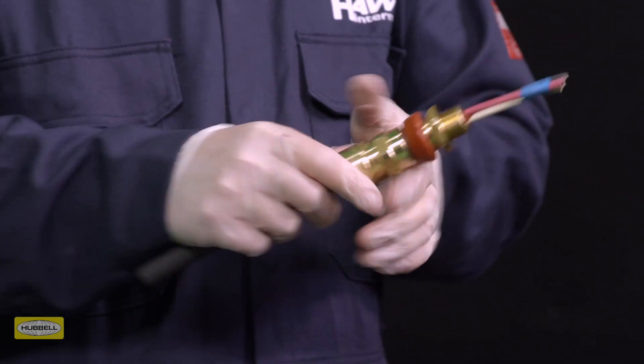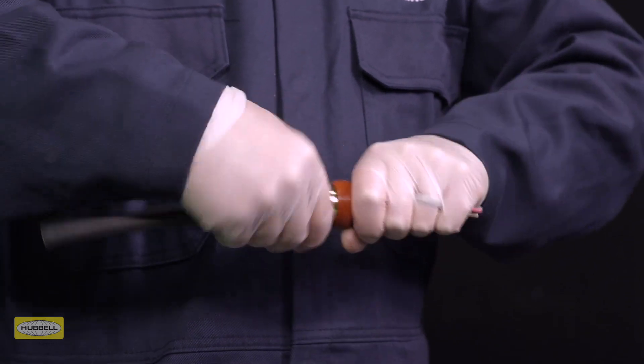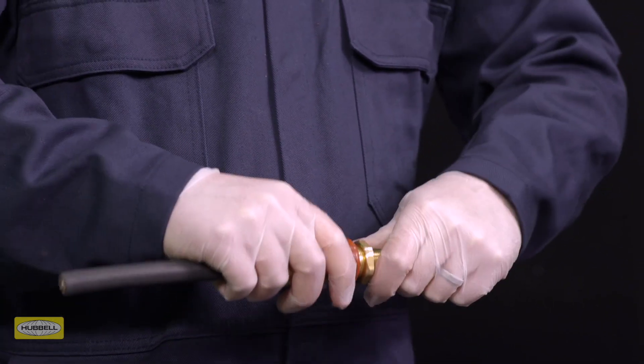Place the entry over the silicon pot to ensure it is held in the correct shape. Screw up the gland hand tight.